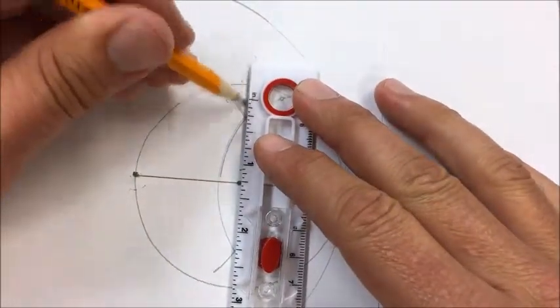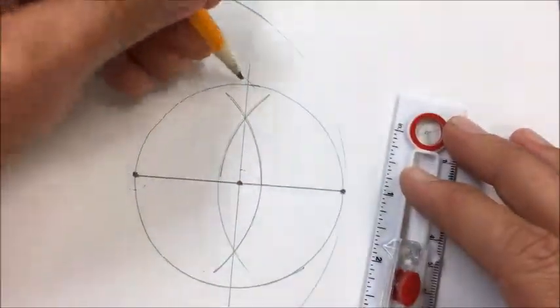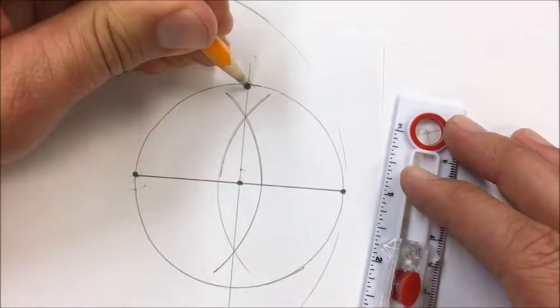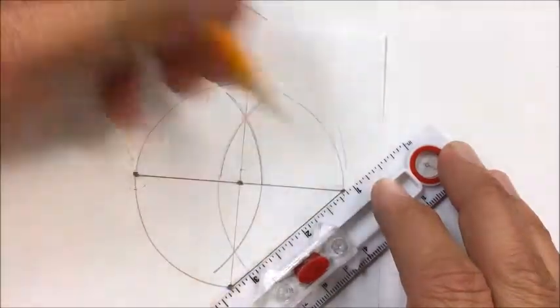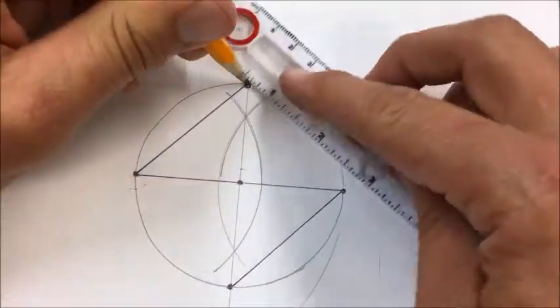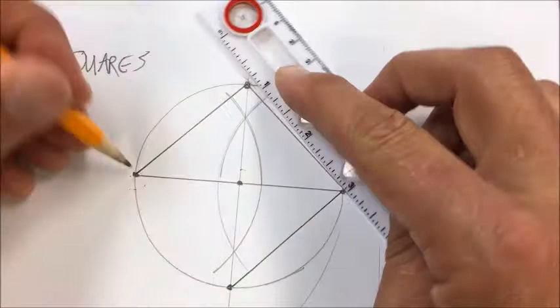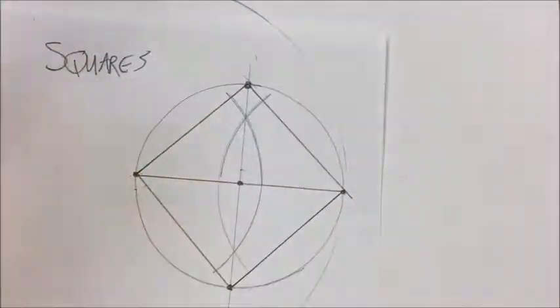So notice what I have now is perpendicular bisector to that. So if I extend it, it goes like this. And now where it intersects the circle, those are my other two vertices for the square. Connect them and I have a square inscribed in a circle.